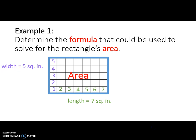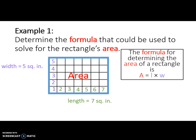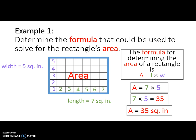Now that I have the rectangle's length and width, I can plug those numbers into the formula we use to determine the area of rectangles. The formula for determining the area of a rectangle is A is equal to L times W, or area is equal to length times width. To solve for the area, I will multiply seven times five. Seven square inches times five square inches is equal to thirty-five square inches, so A is equal to thirty-five square inches, which means that the area of this rectangle is thirty-five square inches.